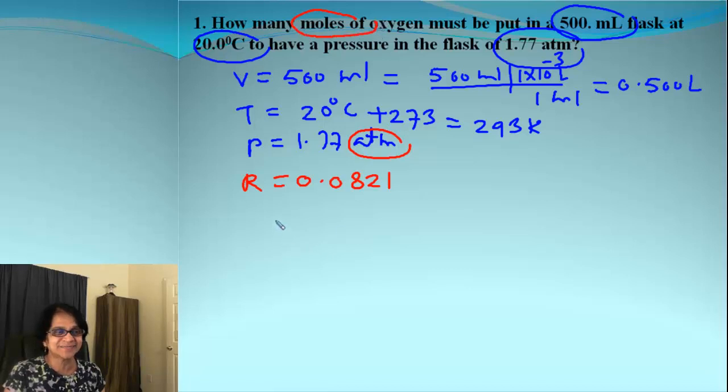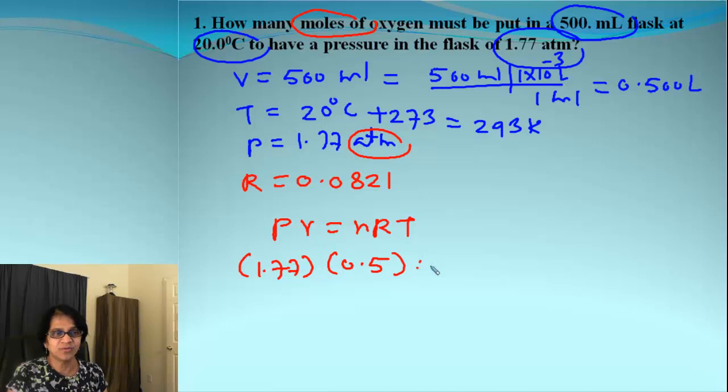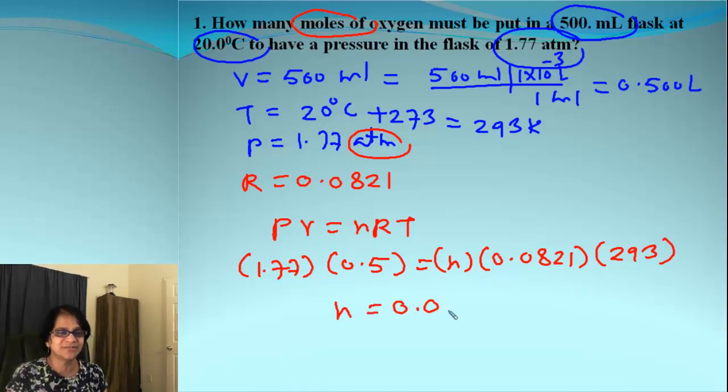And now it is simply plug and chug to find out the moles of oxygen gas. So the formula is PV equals nRT. And I am simply going to plug the values. That's pressure. Volume is the one in liters. That's 0.5. Equals n. That's our unknown. R is 0.0821. The temperature is 293. When we solve for that n, what I got was 0.0368. And those are the moles.